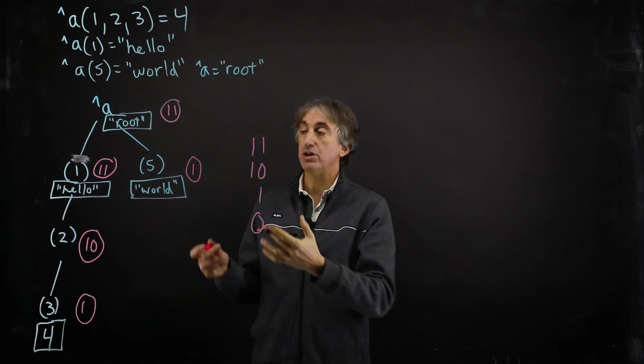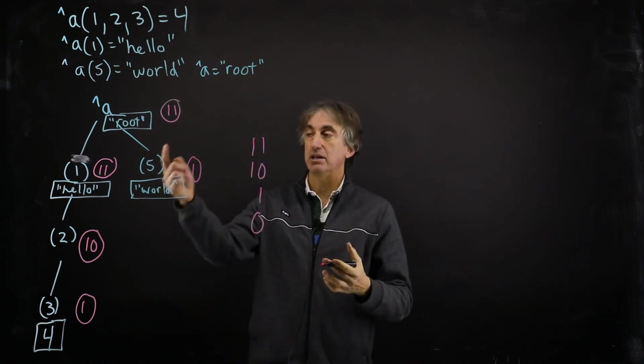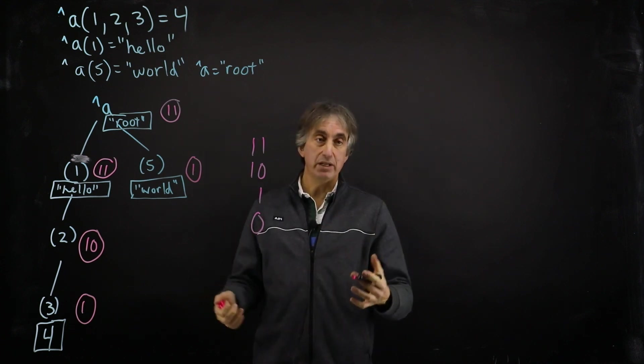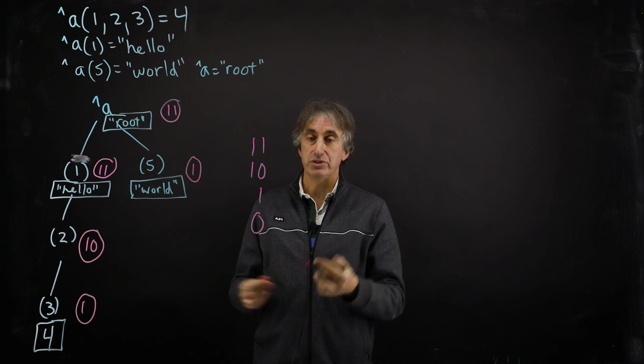If we called isDefined on a node that doesn't exist, like A of 99, we would get a 0. 0 means no data, no descendants. The node does not exist.